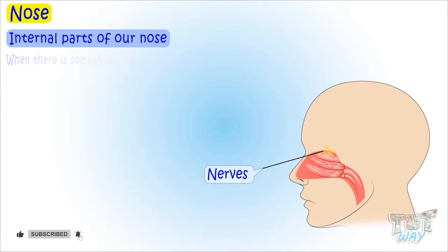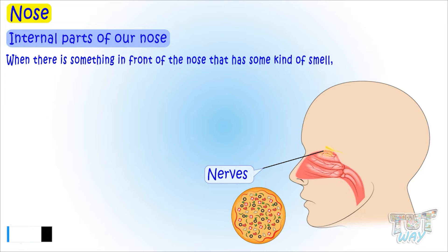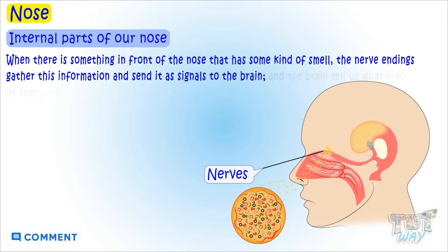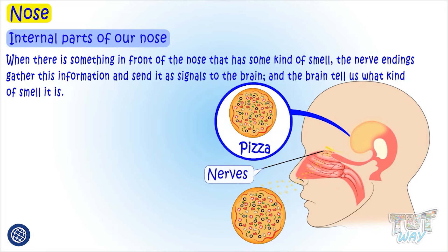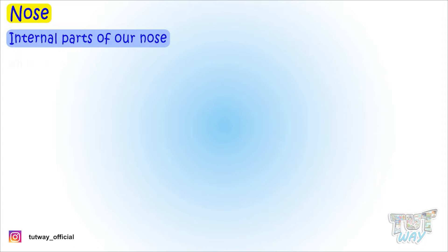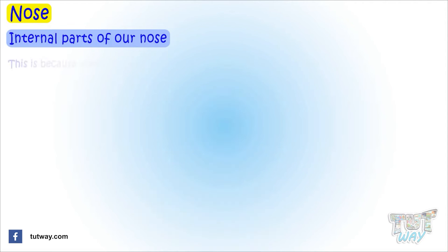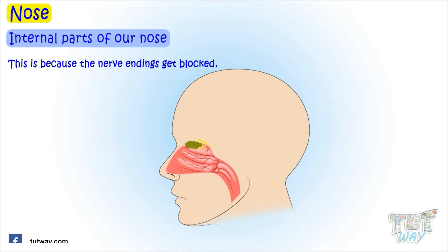The nerve endings on the nasal membranes help us to smell. When there is something in front of the nose that has some kind of smell, nerve endings gather this information and send it as signals to the brain, and the brain then tells us what kind of smell it is. When we are suffering from cold and cough, we are not able to smell, because the nerve endings get blocked.